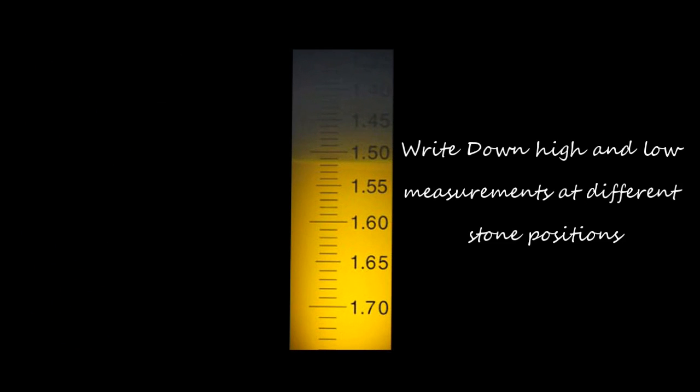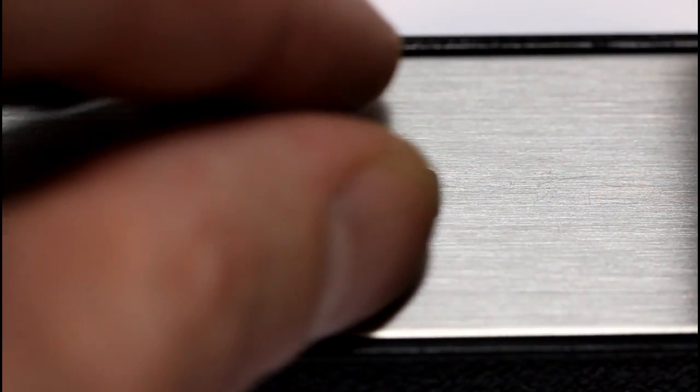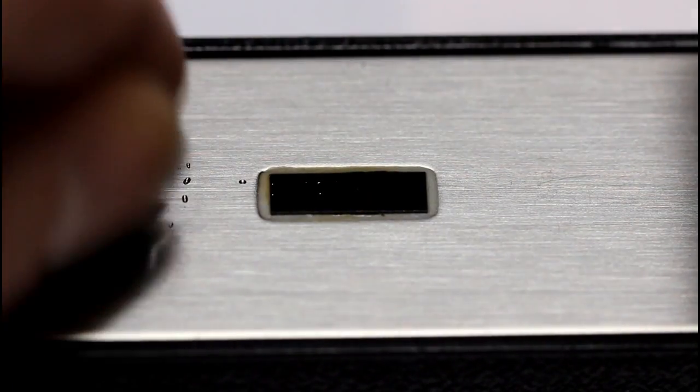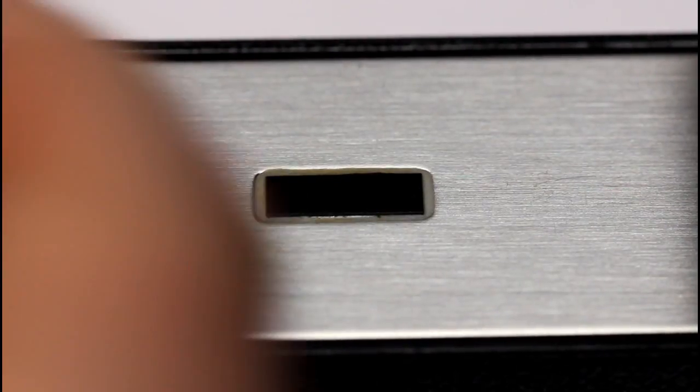So the way to get a really accurate reading is to start to write down exactly where the shadow falls on the scale. Taking measurements with the stone at a few different positions. When we're finished we should take a soft tissue and carefully wipe away the fluid so that we can protect the prism.